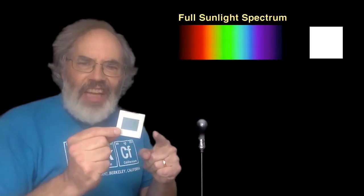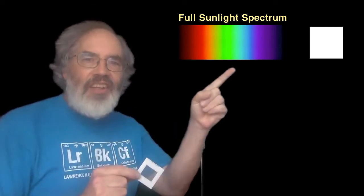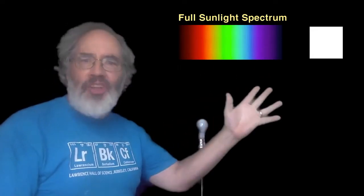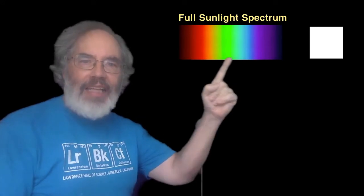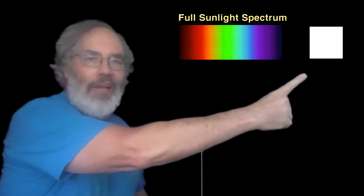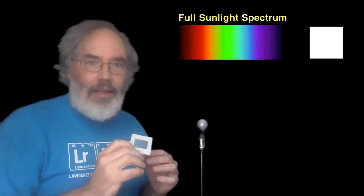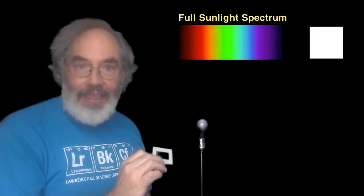The diffraction grating didn't make those colors — every color in the spectrum comes from the light itself. Here's a picture of the spectrum that shows the colors of the rainbow from violet to red. Mix them all together and you get white. What the diffraction grating does is it unmixes the colors so that we can see them spread out separately.